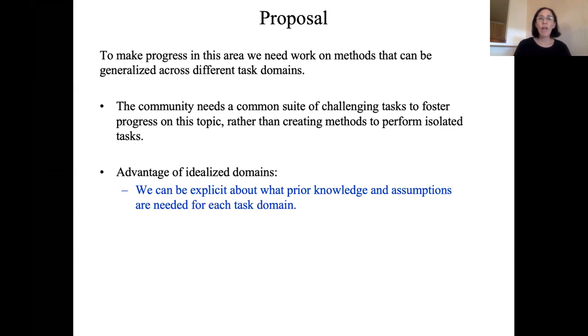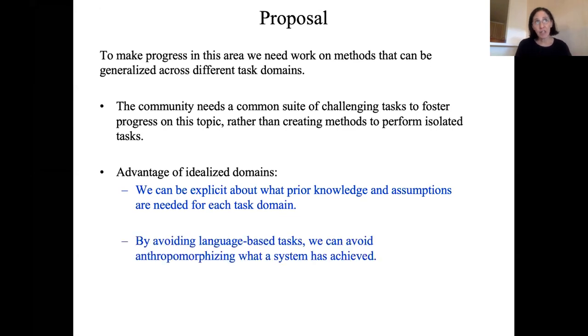The advantage here of idealized domains is that we can really be quite explicit about what prior knowledge and assumptions are needed, rather than having an open ended domain like analogies and language, which I find to be difficult to assess. If a program can make analogies between stories in natural language, we often anthropomorphize what a system has achieved because we assume that it has understood the language the same way that we understand it. But I think that's a danger that we have to avoid. To avoid that, we can use these very idealized systems in which it's very explicit what is known and what is understood and what is not.